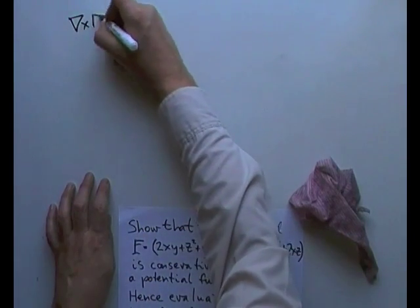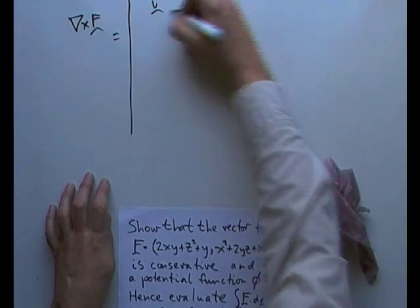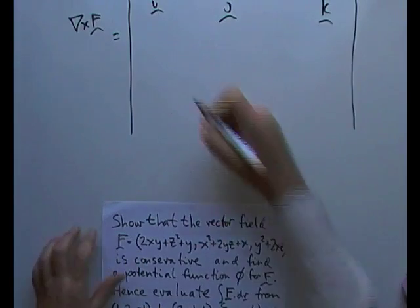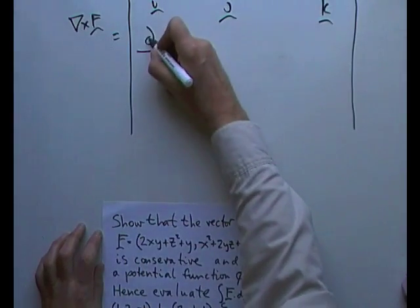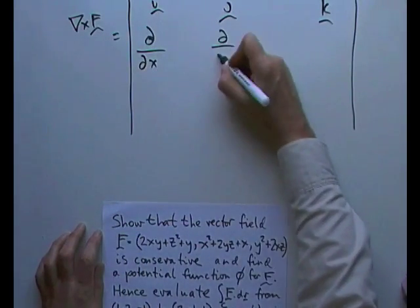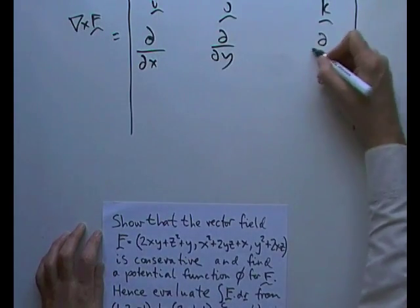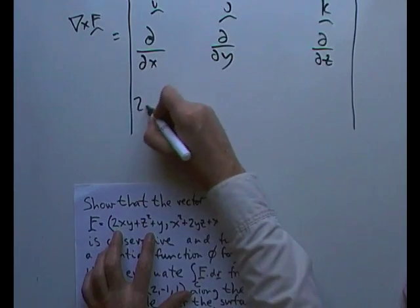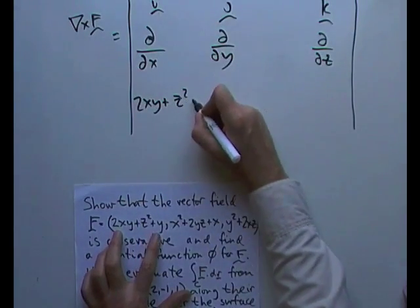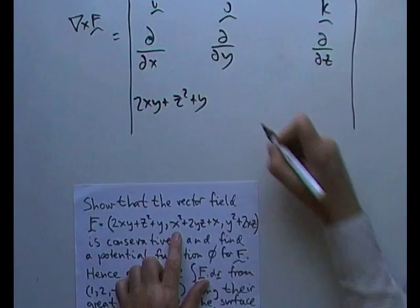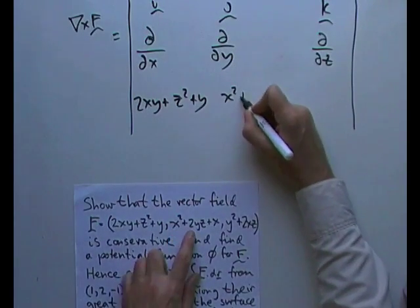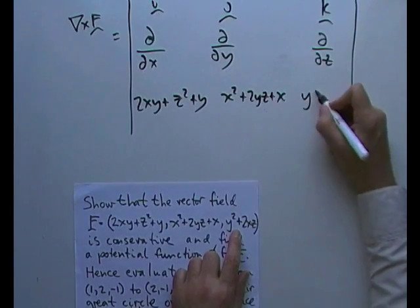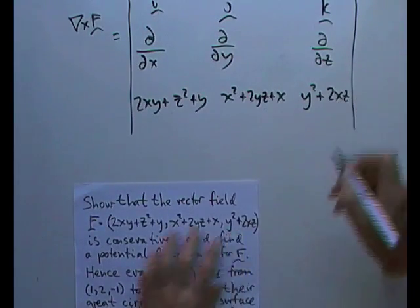So I want curl F, i, j, that could be enough space because I don't know why I put so many terms in this. Using the vector differential operator, del or nabla if you will, and then the components of the vector 2xy plus z squared plus y, took a lot of room there, x squared plus 2yz plus x, that took a lot of room as well, looking this is shorter, y squared plus 2xz.